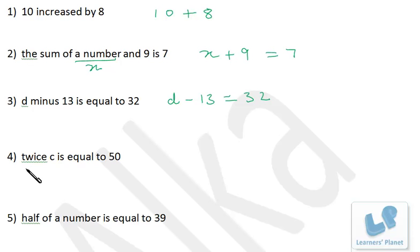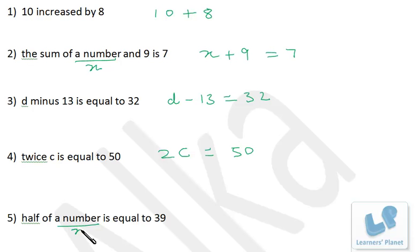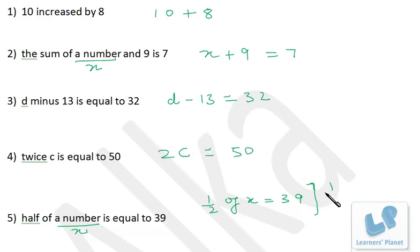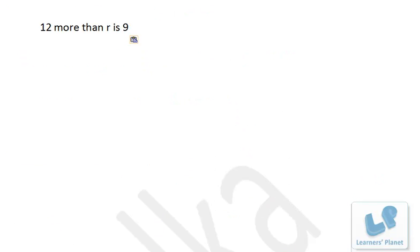Twice c is equal to 50, so 2c = 50. Half of a number is equal to 39 — you don't know the number so take it as x. Half of x means x multiplied by 1/2, so (1/2)x = 39.